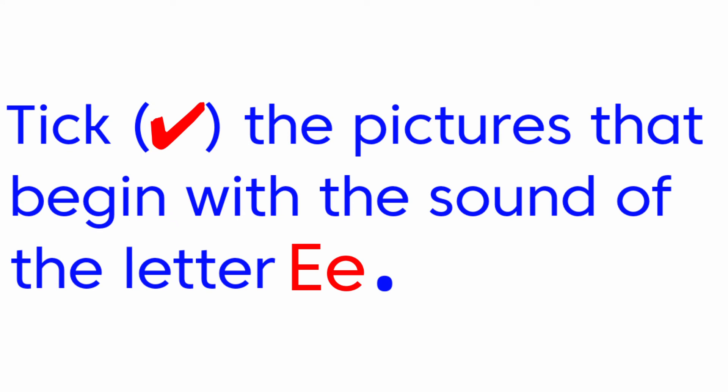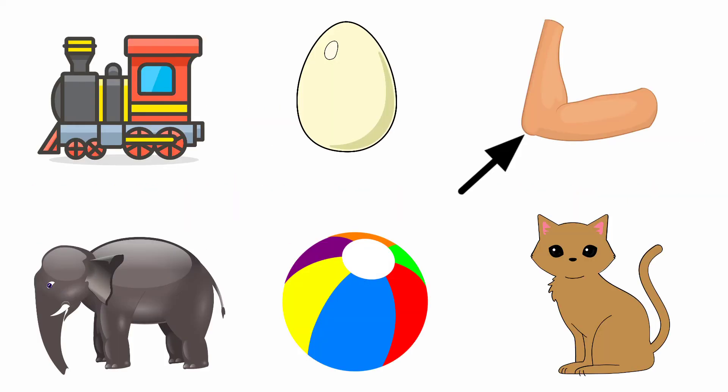Next, take the pictures that begin with the sound of the letter E. The sound of the letter E is 'eh'. Here they have given engine, egg, elbow, elephant, ball, and cat. Among these pictures, we are going to tick the picture that begins with the sound of the letter E.